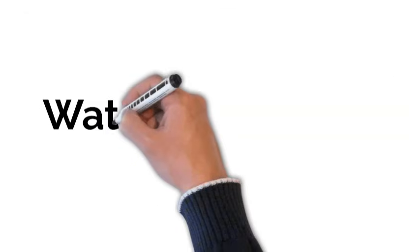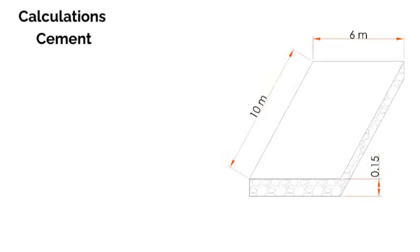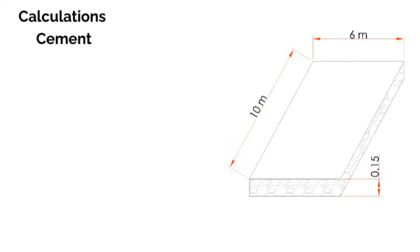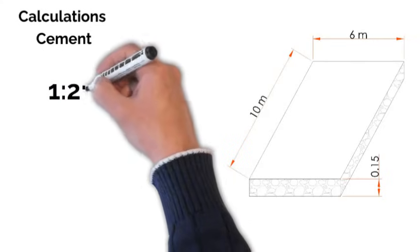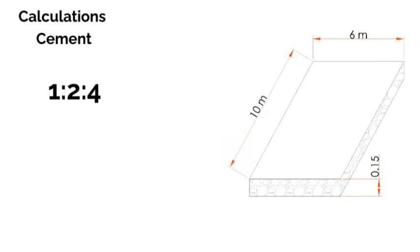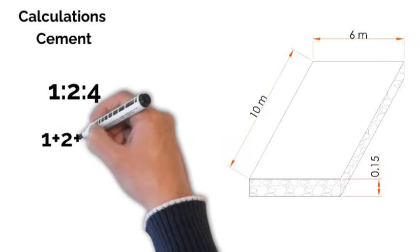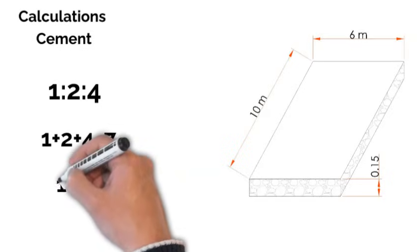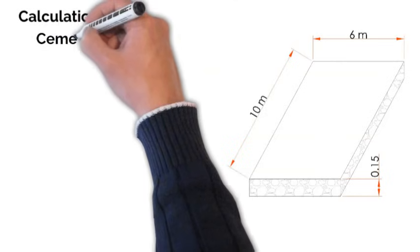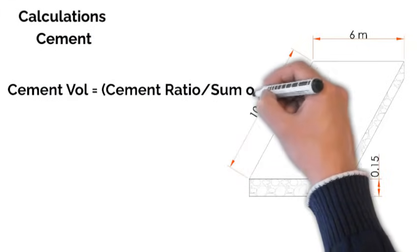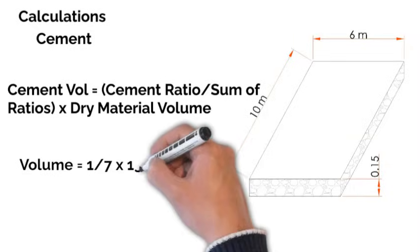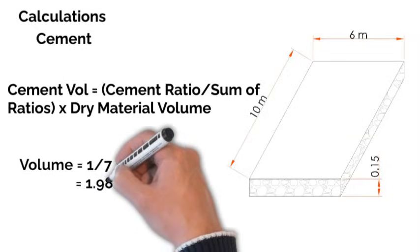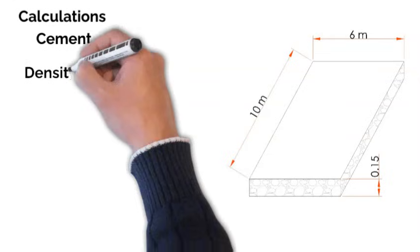The first material that we will calculate is the cement. Our mix ratio is 1:2:4. I will apply this simple fraction of material ratio divided by the sum of the ratio, where the sum is 1 plus 2 plus 4, which equals 7. So cement becomes 1 over 7 multiplied by 13.86, which equals 1.98 cubic meters. Using the formula, density equals mass over volume.